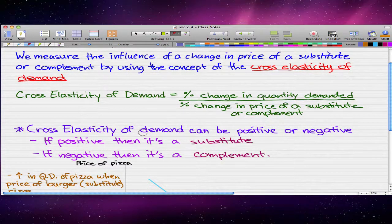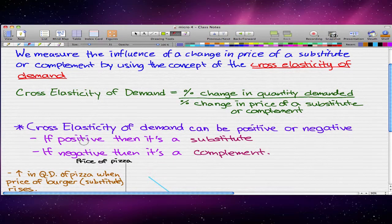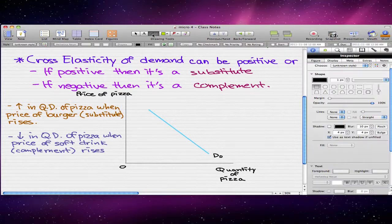The cross-elasticity of demand can be positive or negative. If it's positive, then it's a substitute, and if it's negative, then it's a complement.